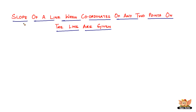In this video, we are going to look into the slope of a line when coordinates of any two points on the line are given. In the previous videos, when we looked into slope, we found the slope only when we had the angle in which the line was inclined to the x-axis.